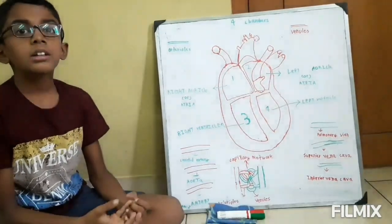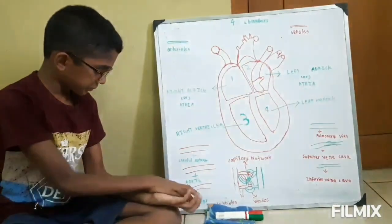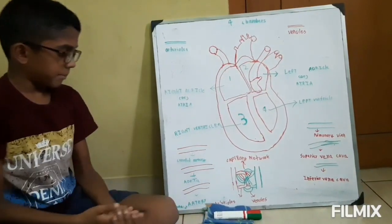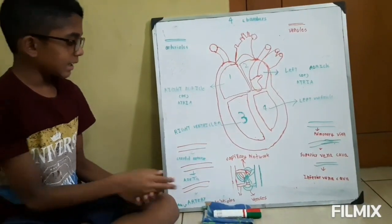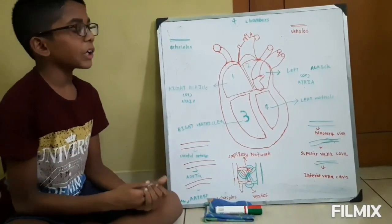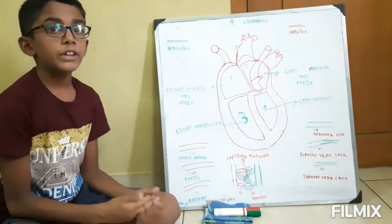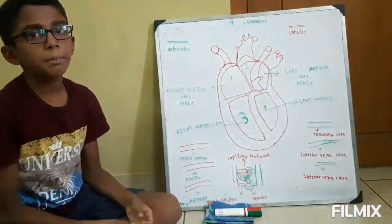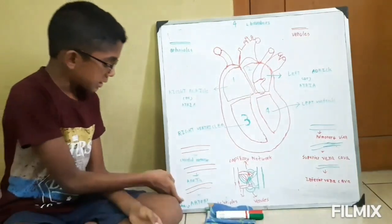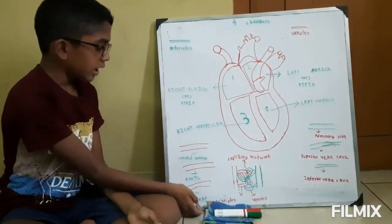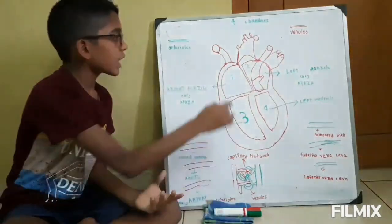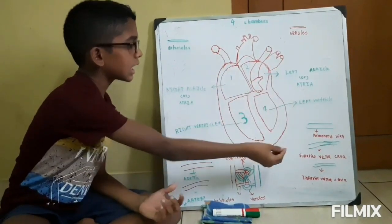The third type of artery is called the Pulmonary Artery. We all know that arteries take pure blood, but this Pulmonary Artery alone will take impure blood from the human heart to the lungs.